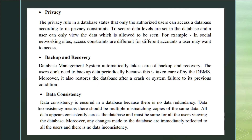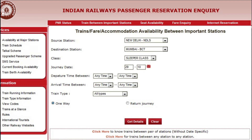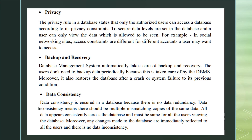A database management system performs automatic backups from time to time, so if the computer crashes, the database can be recovered. Another benefit is data consistency — it maintains the same information for every user, and whenever data changes, the change is immediately reflected for all users. The railway reservation system is an example: as soon as a seat is booked, everyone gets the updated information.